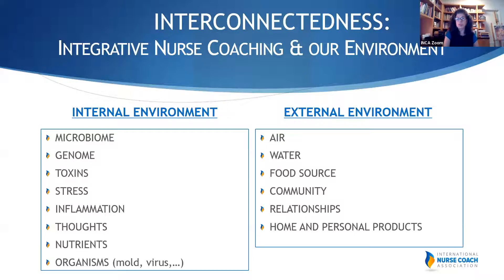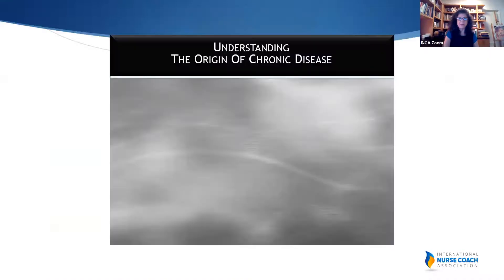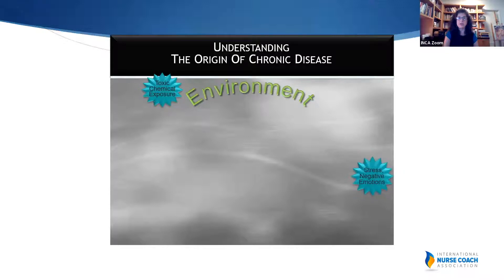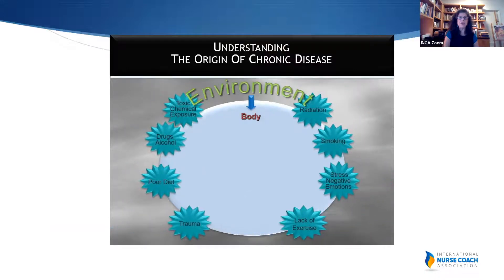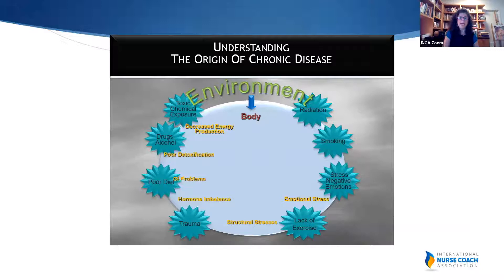Understanding the origins of chronic disease from an environmental perspective means looking at toxic chemical exposures, stress and negative emotions, poor diet, lack of exercise, drugs and alcohol, radiation, and smoking. Eventually all of this starts to close in on our body — decreasing energy production, impairing detoxification, impacting GI flora and the microbiome, influencing hormones, structural integrity at a cellular level, immune system function, and contributing to emotional stress.